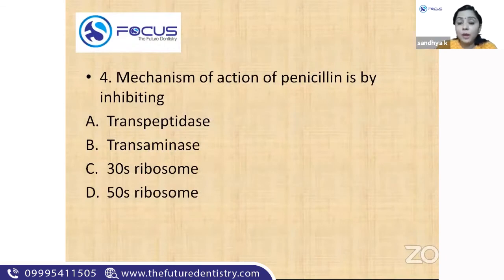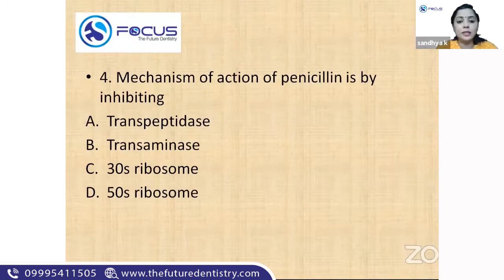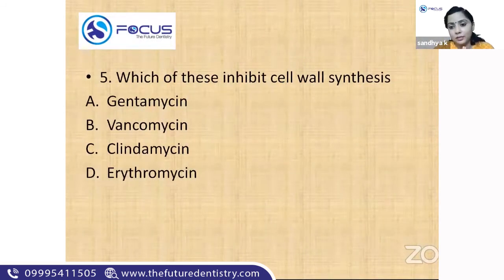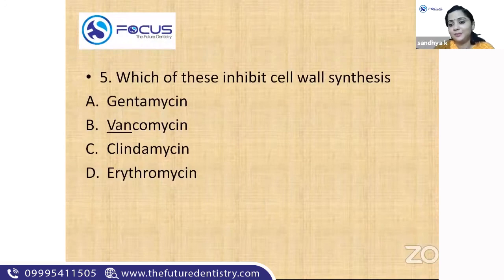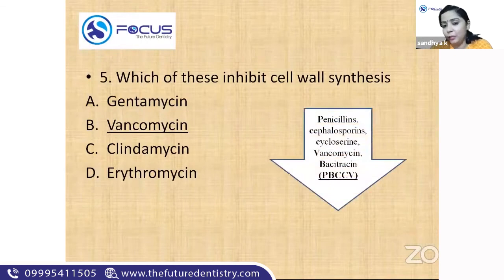Final question: 'Mechanism of action of penicillin' — it acts by inhibiting cell wall synthesis, specifically by inhibiting the enzyme transpeptidase. Question: 'Which of these inhibits cell wall synthesis? Gentamicin, vancomycin, clindamycin, erythromycin.' Using the BPC-CV mnemonic, the answer is vancomycin.